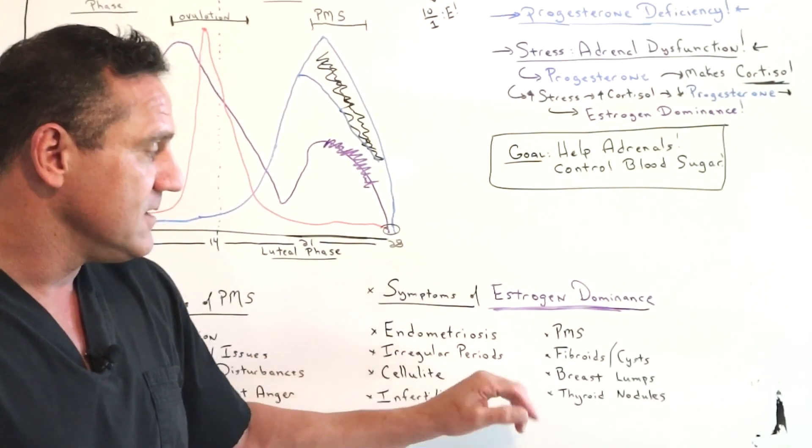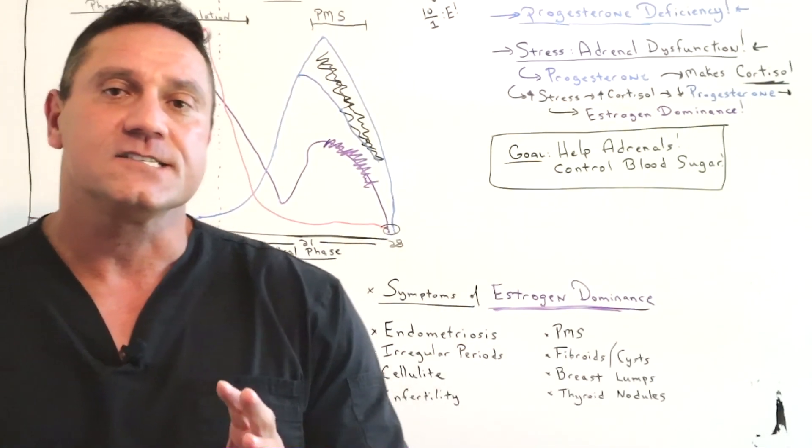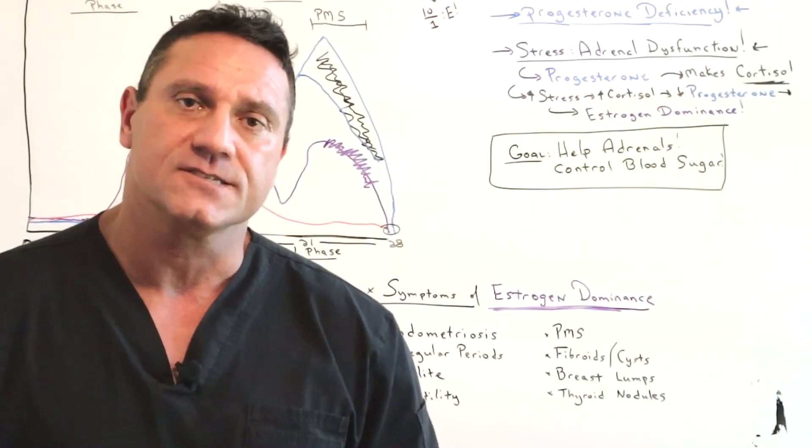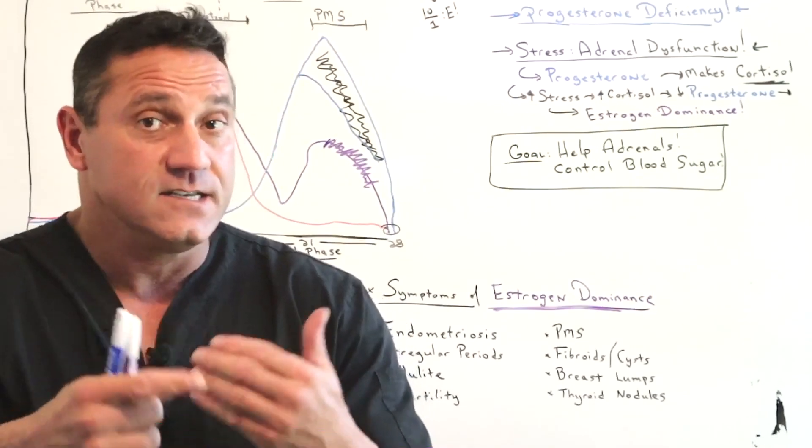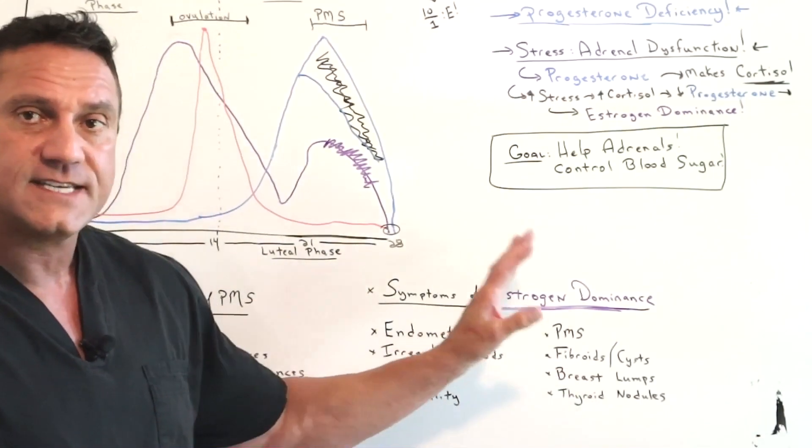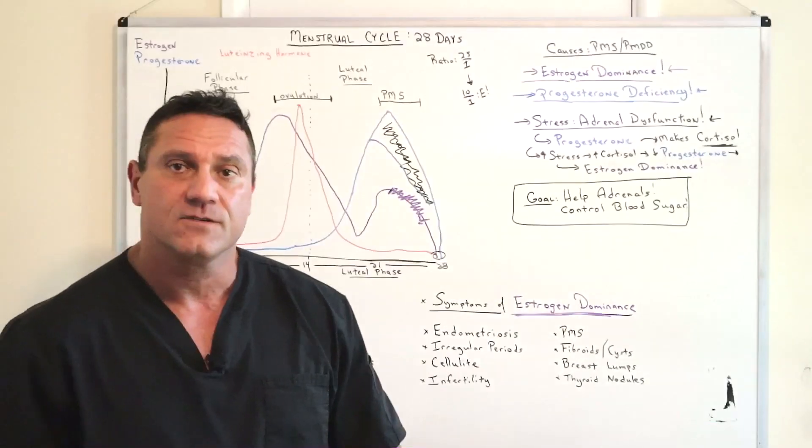Infertility, PMS, fibroids, cysts. Now remember, what's estrogen? Its job is to replicate cells. What are fibroids and cysts? Cells that are replicated. Breast lumps, thyroid nodules, all signs of estrogen dominance.